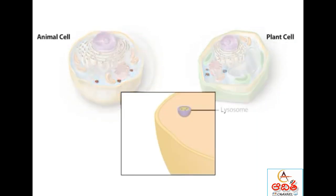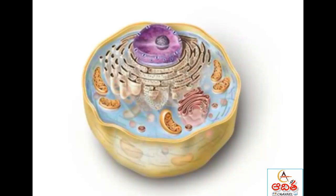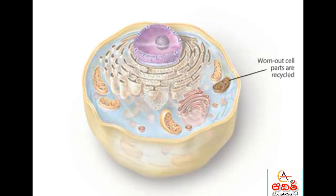Lysosomes are the cell's recycling centers. Full of digestive enzymes, lysosomes break down food and a variety of other particles taken in by the cell. The subunits from the particles can be used to build new cellular structures. Lysosomes can also break down and recycle materials from inside the cell, such as worn-out cell parts or molecules.